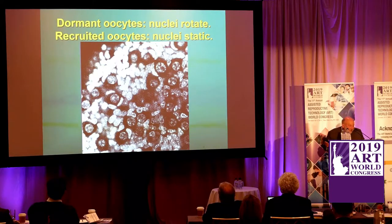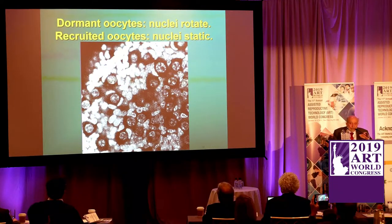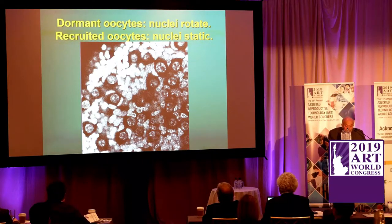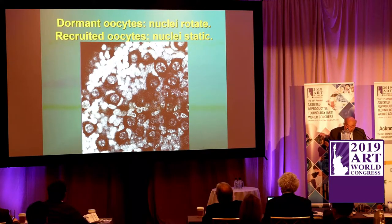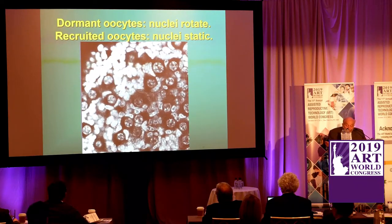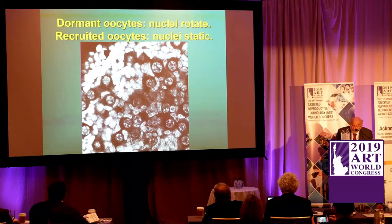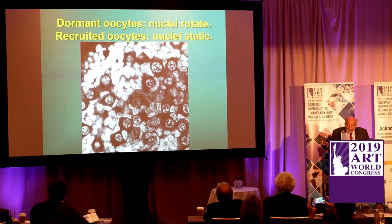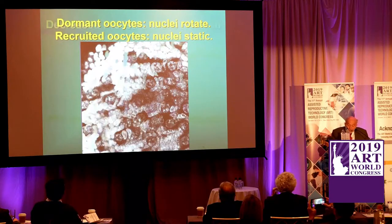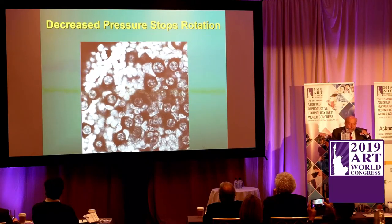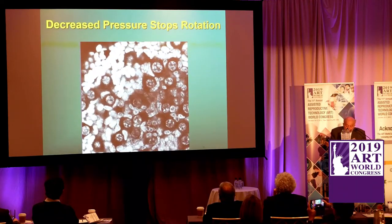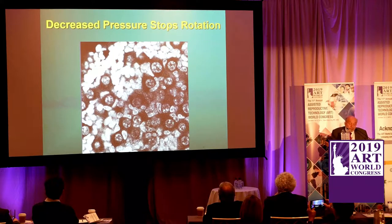This comes directly from Hayashi's lab — we collaborate, with Hayashi, Amanda Clark, and Kyle Orriger. In the peripheral cortex, the nuclei are rotating. In the recruited oocytes closer to the medulla, the nuclei are static. The rotating primordial follicles are arrested; the recruited follicles have static nuclei. The dormant cortex follicles rotate, while internally the nucleus is not rotating in the recruited ones.